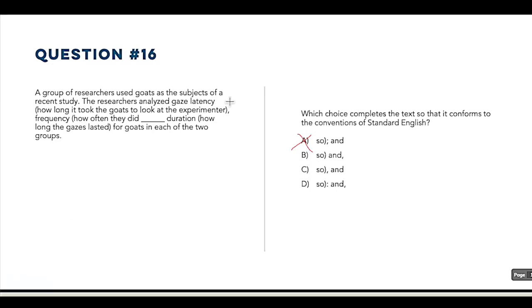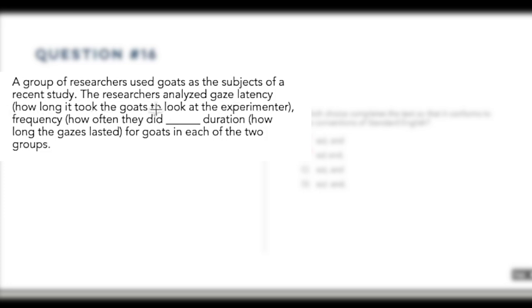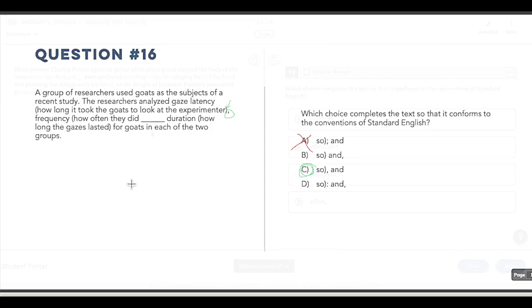So if you were thinking parentheses are punctuation marks, right? So that would count as internal punctuation. You would be right. We have the researchers analyzed gaze latency, how long it took the goats to look at the experimenter. So that's one big long item, right? And we do have internal punctuation. But there's already a comma here starting off the trend. Once we've started with a comma, we need to commit to using commas all the way through. So we could totally switch this out for a semicolon. And then we could go with A and have semicolons throughout this whole list. But we're not allowed to mix and match. So it has to be C, even though we would be able to use semicolons in this case because of the parentheses.